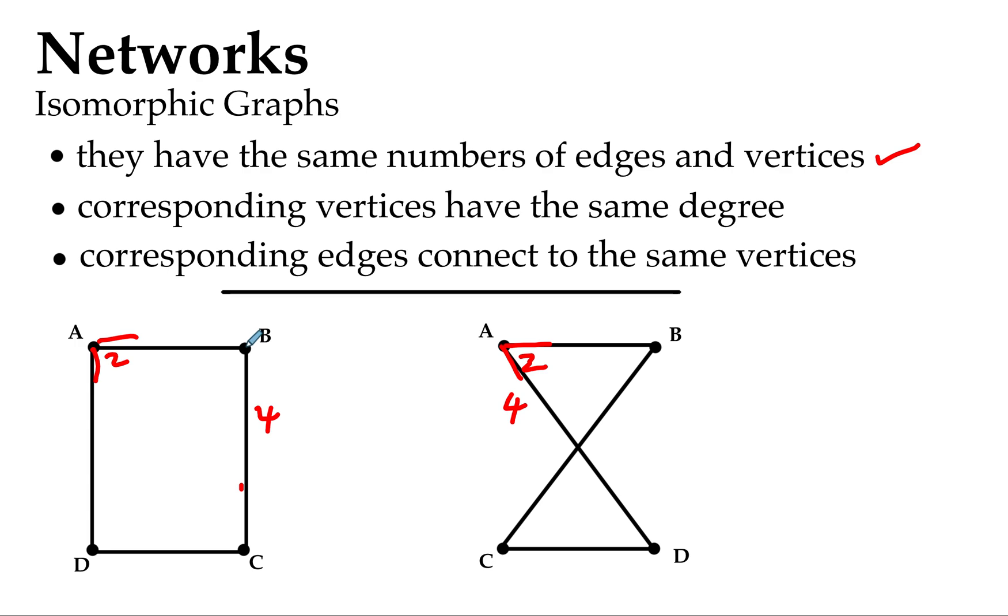B has two, B has two. In this diagram C has two and C has two. And also D has two and D has two. So we've ticked that second condition for isomorphic graphs off. Corresponding vertices have the same degree.